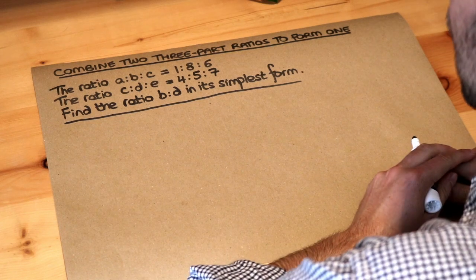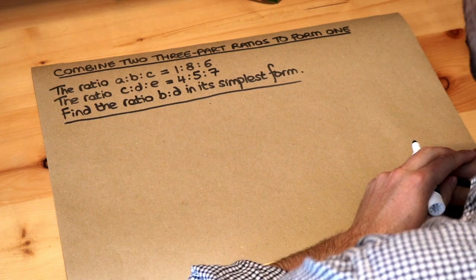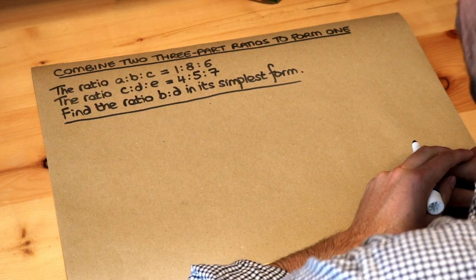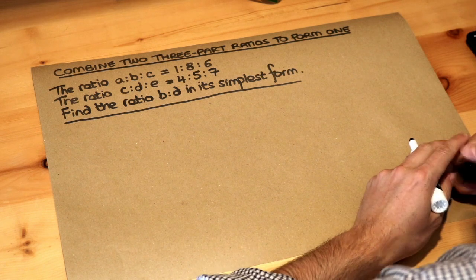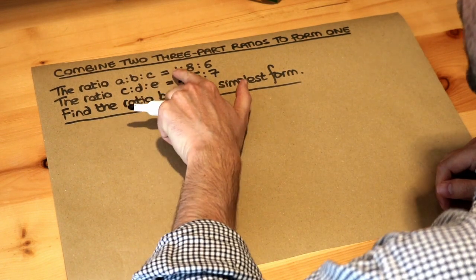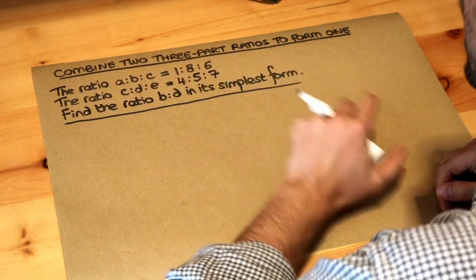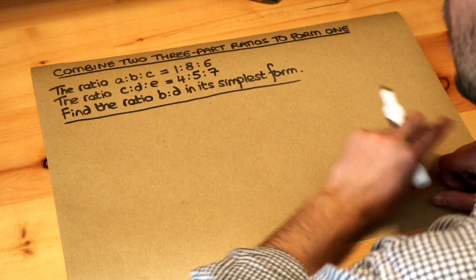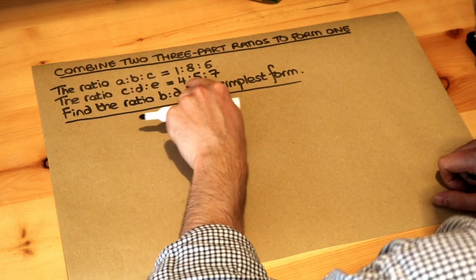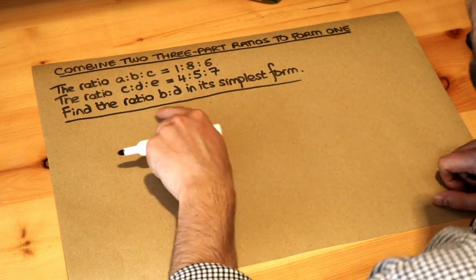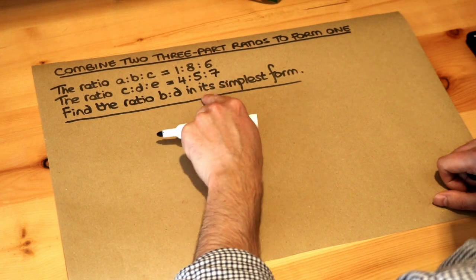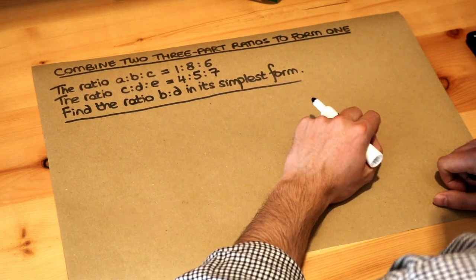Hello and welcome to this Dr Ross video on combining two three-part ratios to form one. Let's read the question. The ratio of A to B to C is 1 to 8 to 6, and the ratio of C to D to E is 4 to 5 to 7. Find the ratio B to D in its simplest form.